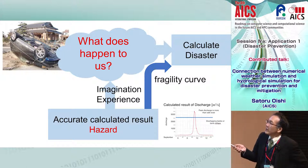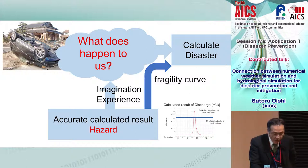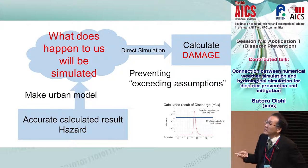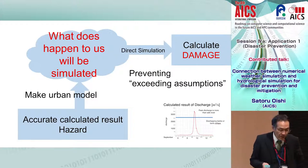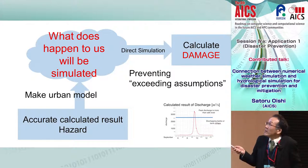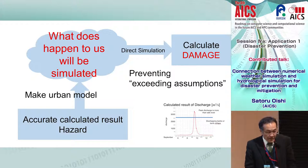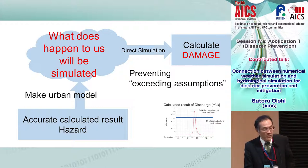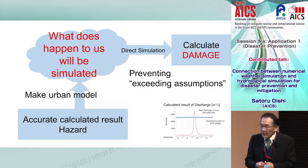Currently we use fragility curves to estimate what happens under various hazard intensities, but we would also like to explicitly calculate what actually happens to us. By using explicit calculation we can prevent assumptions from being exceeded and calculate damage clearly. This is our strategy — to use the post-K computer for direct simulation of what happens to us.